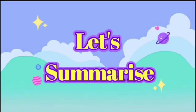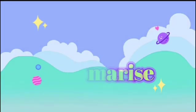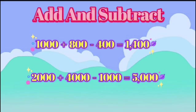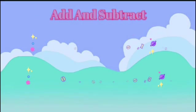Let's summarize. Add and subtract. 1000 plus 800 minus 400 equals 1400. 2000 plus 4000 minus 1000 equals 5000.